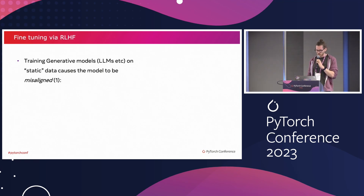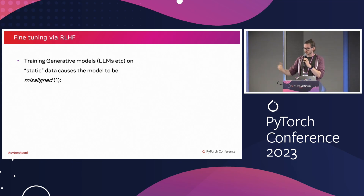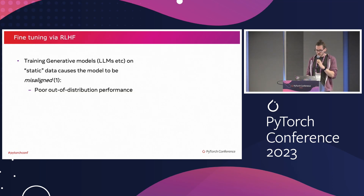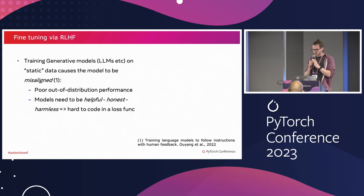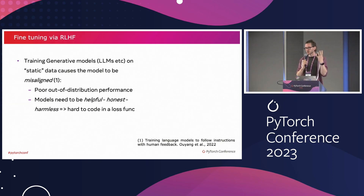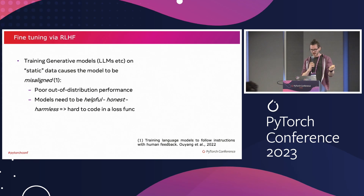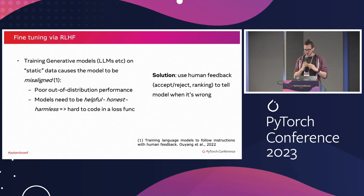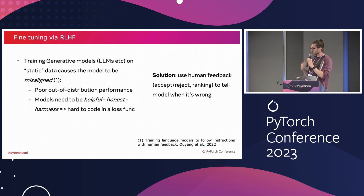The reason for that is that the model is what we call misaligned. Basically, it will start very quickly to produce rubbish when you're asking it something — it has a very poor out-of-distribution performance. What you would like for this model is that it has to be helpful, honest, and harmless. But it's very hard to get a loss function that tells your model how to be more helpful or how to be more honest. So what you can do, and what people are doing, is basically just provide human feedback to the model.